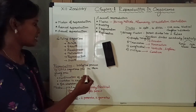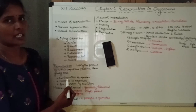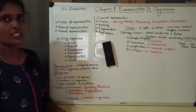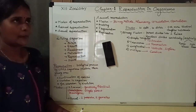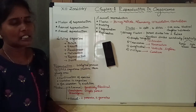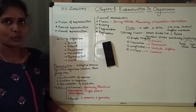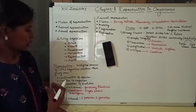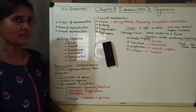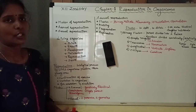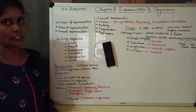Reproduction is a biological process. It is a biological process in which organisms produce their young ones. The young ones are like their own kind — a dog will reproduce to give birth to a dog, a cat will give birth to a cat. It is very important for a living organism.